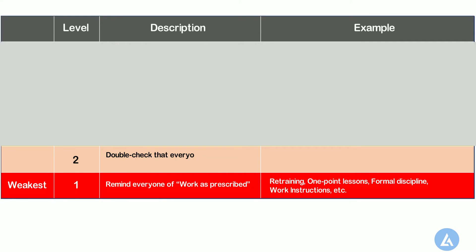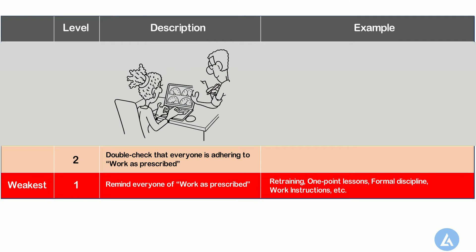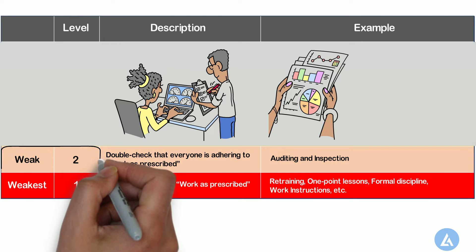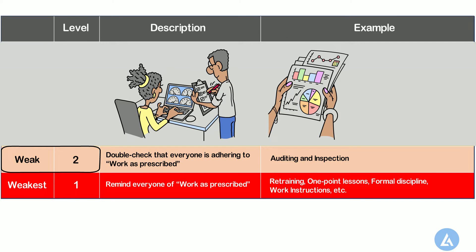Level 2: Double-check that everyone is adhering to work as prescribed. This is considered a better countermeasure compared to level 1. At this level, the focus is on validation of the activities to ensure everyone is adhering to work as prescribed. Examples are auditing and inspection. This is a very good supporting countermeasure to your primary countermeasures, but if your main countermeasure is at level 2, your problem is still going to repeat with higher frequency. That's why it is called a weak level of countermeasure, marked as faint red in the countermeasure ladder.